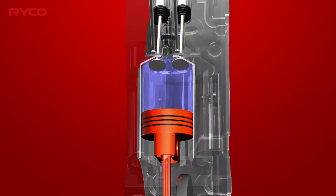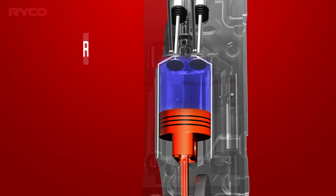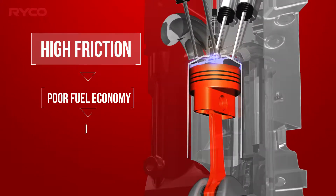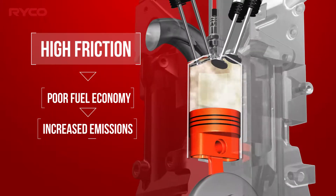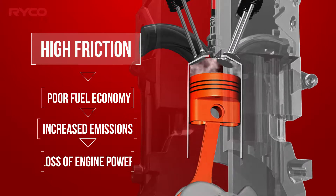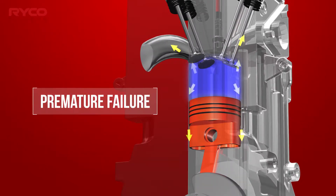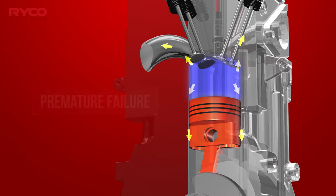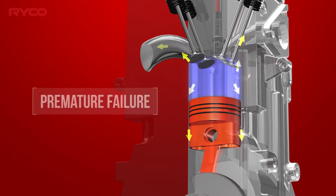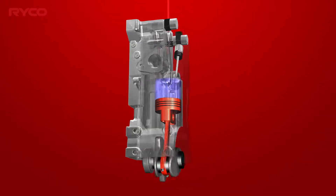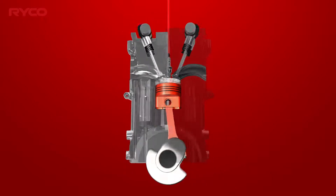Abrasion of components like valve guides, piston rings and the cylinder walls result in high friction and therefore poor fuel economy, increased emissions and a loss of engine power, which eventually leads to premature part or system failure. The last thing we need is a highly abrasive element ingested with the intake air.